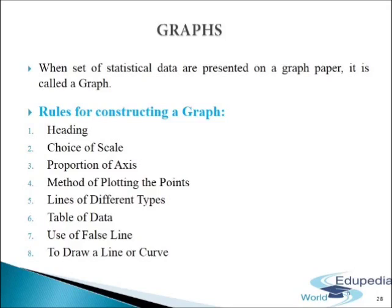Fifth, lines of different types: if more than one line or curve are to be drawn in the same graph, these lines should be differentiated from each other in the form of broken lines, dotted lines, bold lines, etc. Sixth, table of data: it would be useful to give the table of data along with the graph. This helps in verification of the graph.